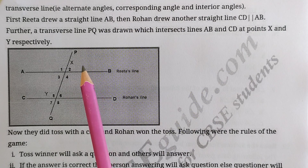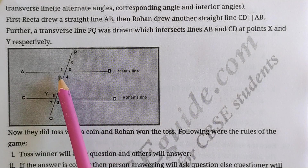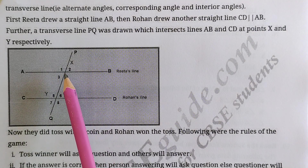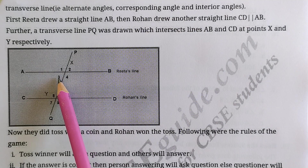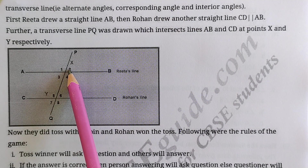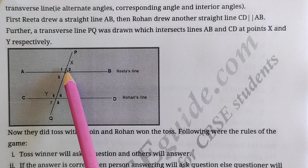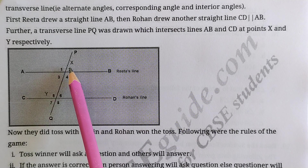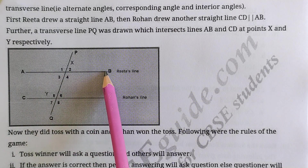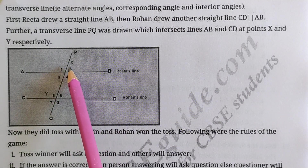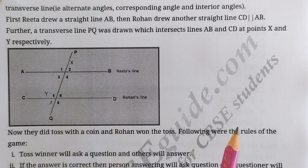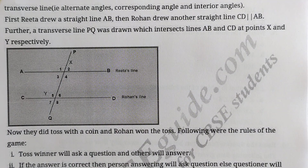At point X, angle 2 and angle 3 are vertically opposite angles. Angles 1 and 4 are also vertically opposite angles — they are equal. Angles 2 and 3 are also equal as vertically opposite angles. Angles 2 and 4 form a linear pair — their sum is 180°. Similarly, angles 1 and 2 also form a linear pair, as they lie on a straight line.